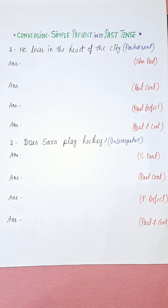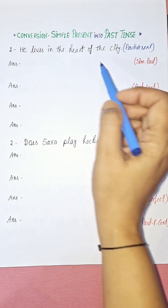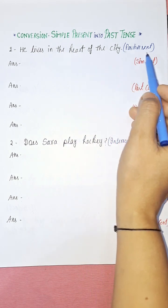So simply, simple present tense is used for habits, daily routine, unchanging situations, general truths, feelings, universal truth, and historical facts. Now we have to convert a simple present positive sentence into various types of past tense sentences.